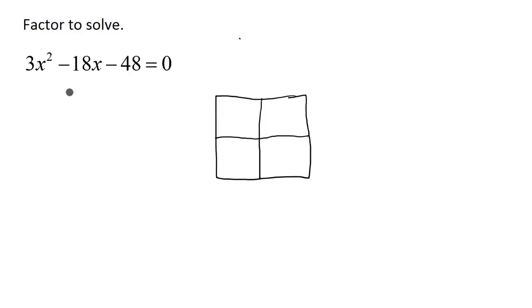So I'm going to go ahead and do that and put the 3 out in front. Then 3 divided by 3 is going to be just that x² left over. -18x divided by 3 is going to be -6x.